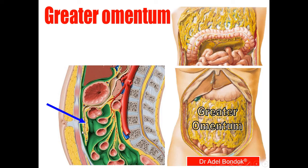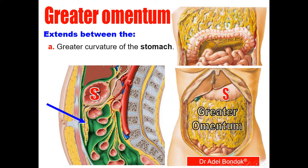The greater omentum is formed of four layers — anterior two layers and posterior two layers. It extends from the greater curvature of the stomach to the transverse colon. Between the anterior two layers and the posterior two layers is the cavity of the lesser sac.